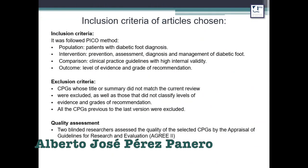For the inclusion criteria, I followed the PICO method. CPGs whose title and summary did not match with the current review were excluded, as were CPGs that did not classify levels of evidence or the grade of recommendation. All previous versions of CPGs that were not the latest were also excluded.